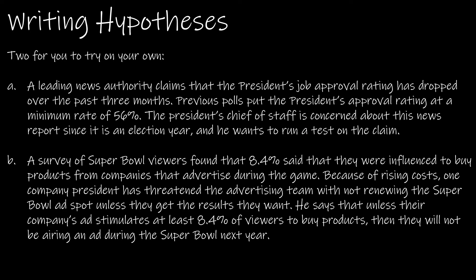Here are two questions for you to try on your own. Press pause and try both questions; when you're ready, press play to see the solutions. For the first question, we're dealing with the president's job approval rating. We have H sub zero and H sub A. We're looking at an approval rating, which is a percentage, so this should be P, not mu. People are concerned the approval rating is decreasing or has dropped over the past three months. Previously the rate was 56%, so we assume it's still 56% and test whether it has dropped: H sub zero: P equals 0.56. H sub A: P is less than 0.56.